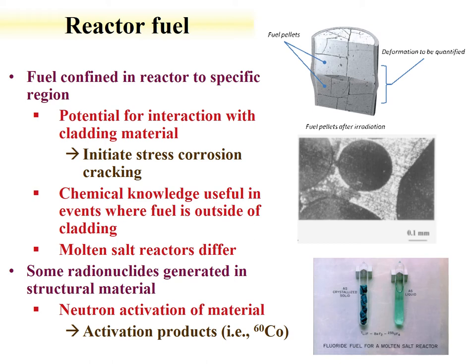Another example of chemistry changes: a U3Si kernel — uranium silicide — is being explored as a fuel. This material is interdispersed in zirconium cladding, forming a pellet that slides into the cladding. Upon irradiation, microscopy shows changes in chemistry — interaction between the zirconium and the uranium silicide material — driven by the fission products that are produced and interacting.